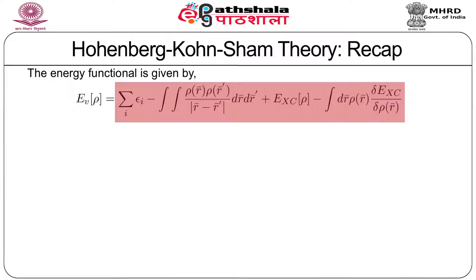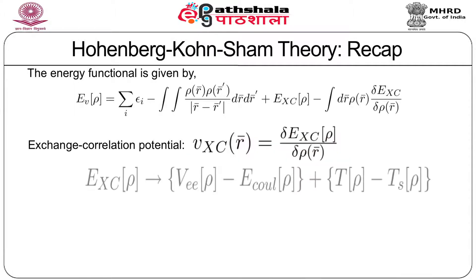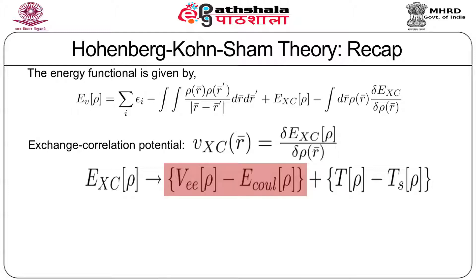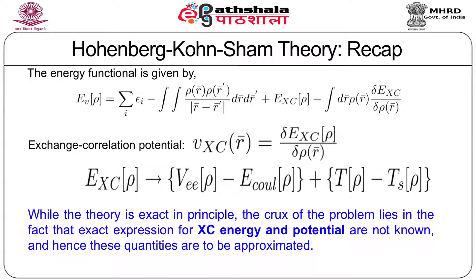The total energy functional is given by summation over i of epsilon_i, minus the integral of rho(r) rho(r') divided by |r minus r'| dr dr', plus the exchange correlation energy E_xc, minus the integral of dr rho(r) times delta E_xc divided by delta rho(r). Note the exchange correlation potential V_xc is given by the variation of the exchange correlation energy with respect to the density. The exchange correlation energy depends on the density and is given by the difference between V_ee and the Coulomb energy, together with the difference between the interacting and non-interacting kinetic energy.